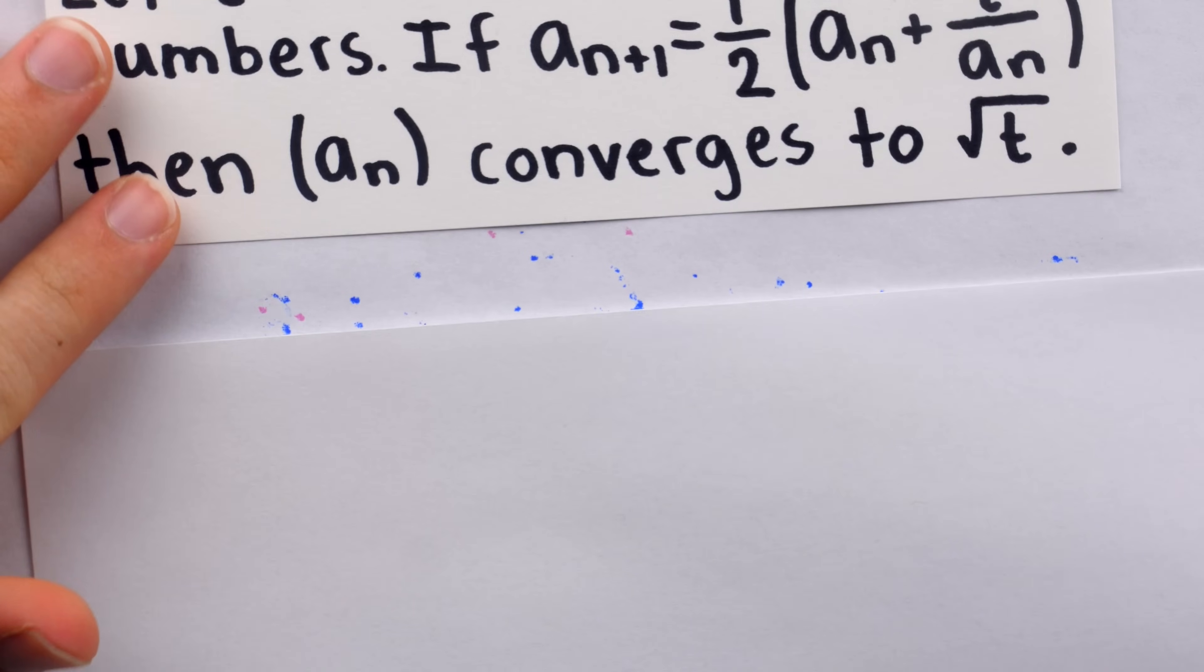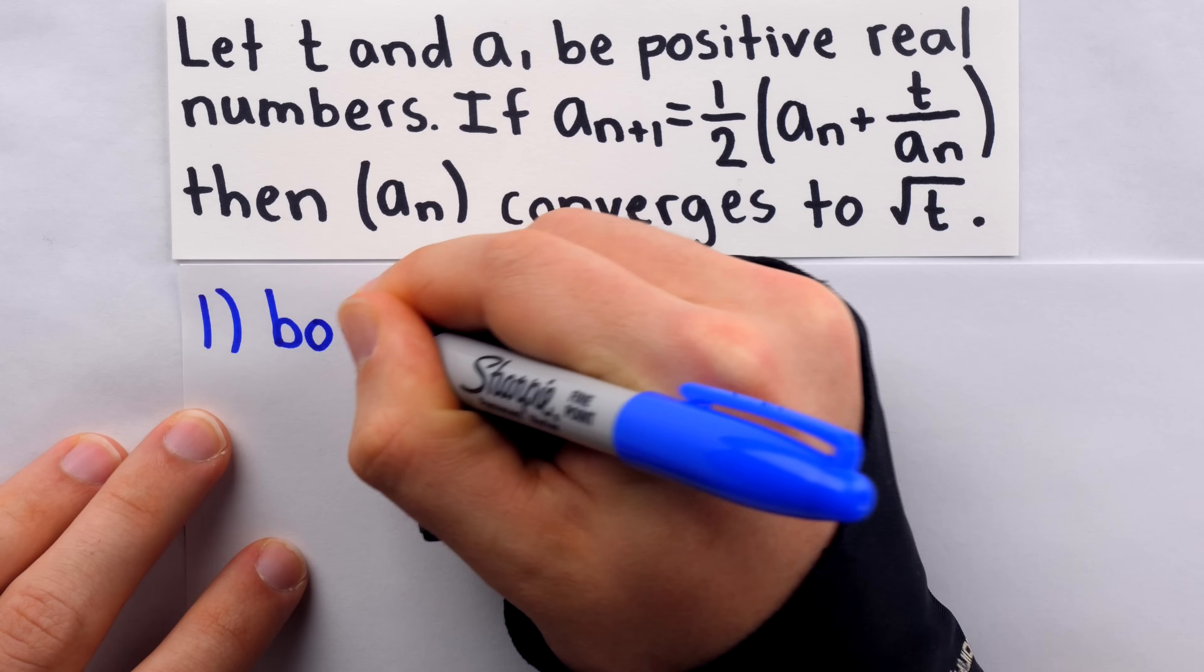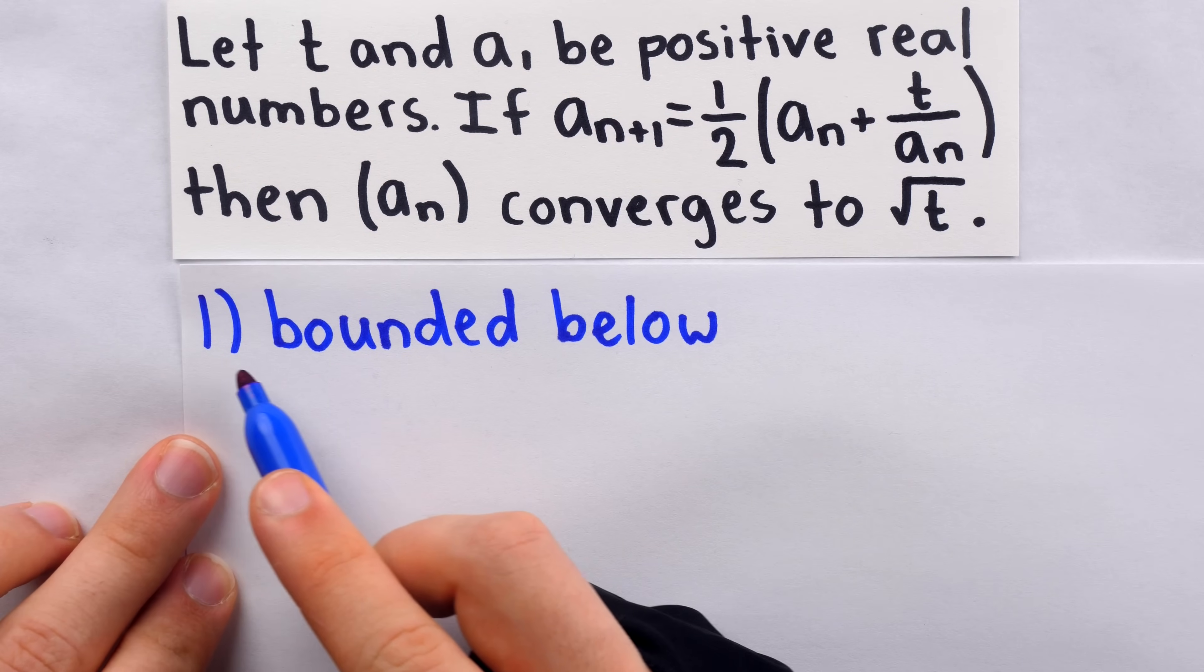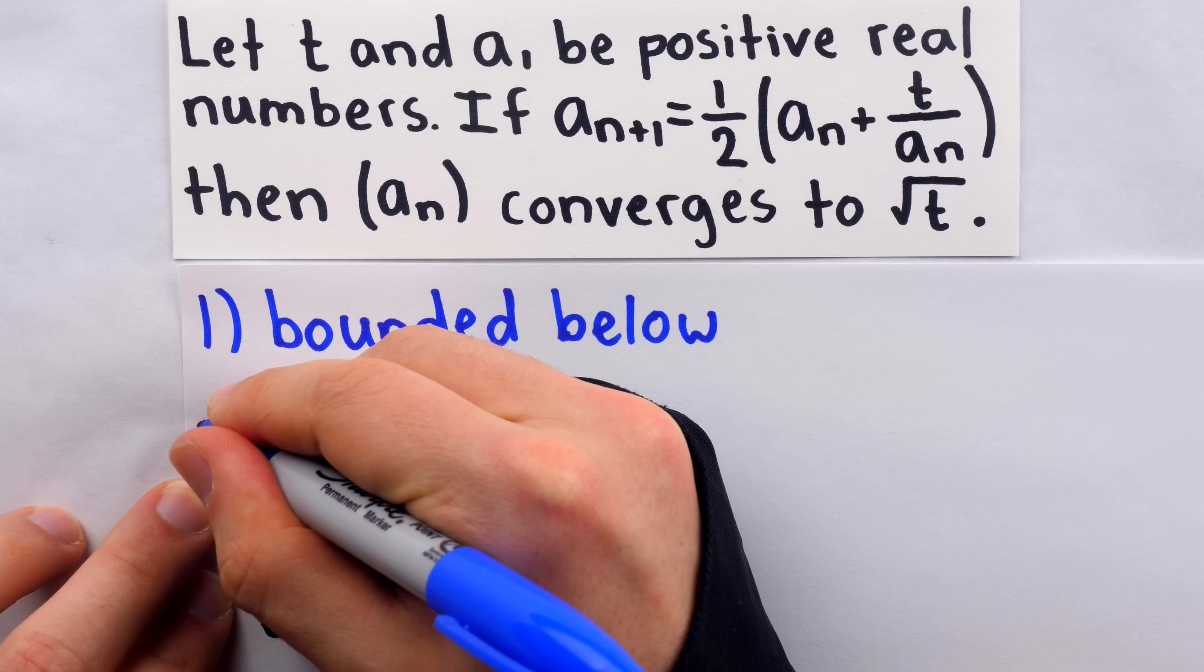To prove this, though, we're going to have to do three things. First, we're going to prove that our sequence is bounded below. When we use Herron's method, we actually get overestimates, and we're going to prove that. Then, we will have to prove that our sequence is decreasing.